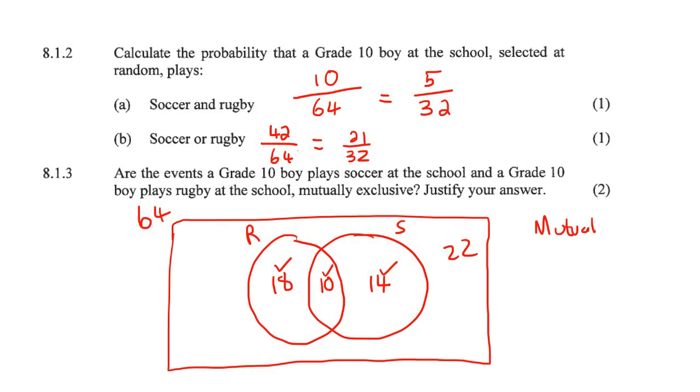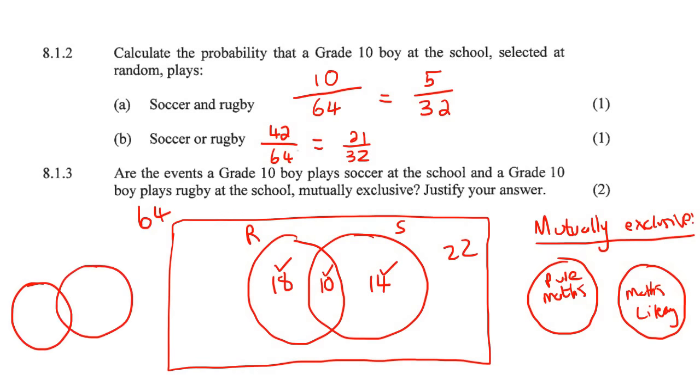Okay. So when things are mutually exclusive, it means that they cannot happen at the same time. So the two circles would look like this. It's almost like someone doing pure maths and then someone doing maths literacy. You're not going to find someone who does both. Yes, I've heard of one story in my whole life of someone who did both, but I think the school was just trying something. But in general, like if you look at your own school, there's no one who does pure maths and maths literacy. Those are called mutually exclusive. You don't get pure maths and then interlinking or intersecting with maths literacy.